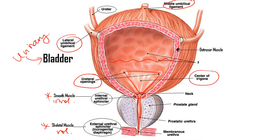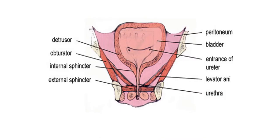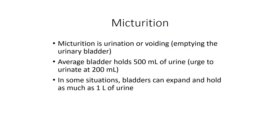That takes us to page 114, where we'll talk about voiding or micturition. When you feel a stretch in the urinary bladder, the walls expand and baroreceptors send signals to your brain, creating the urge to go to the bathroom. This emptying of the bladder is called micturition, also known as urination, voiding, or emptying the urinary bladder.